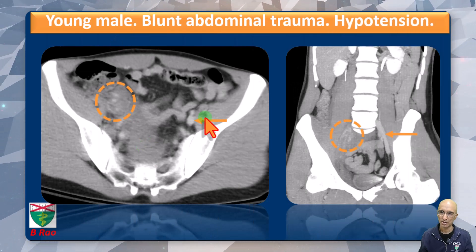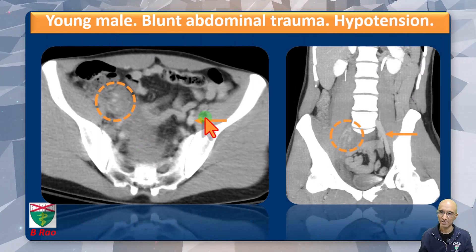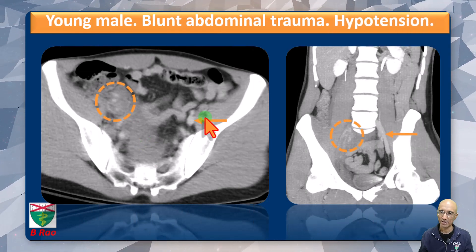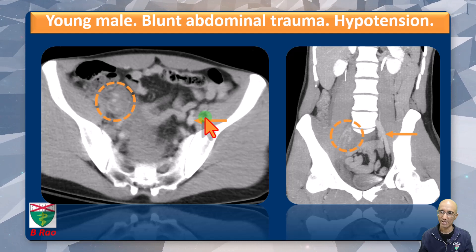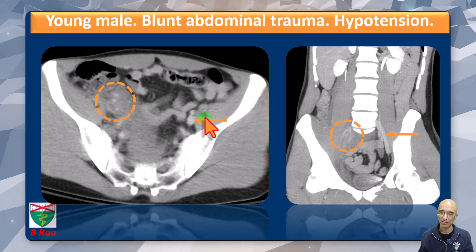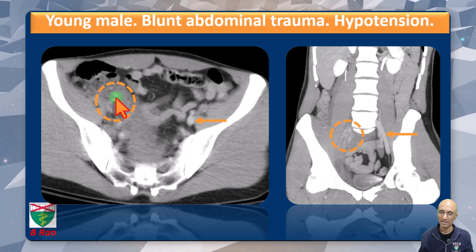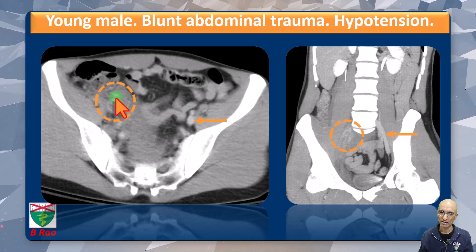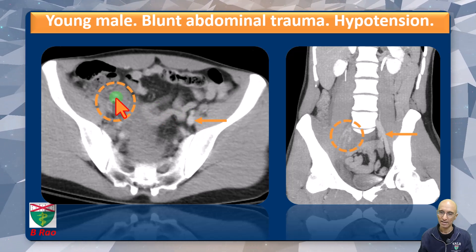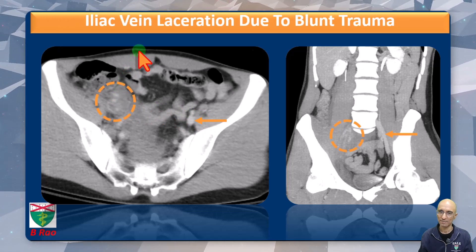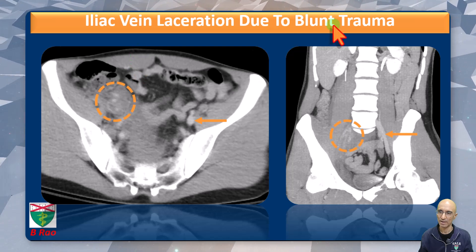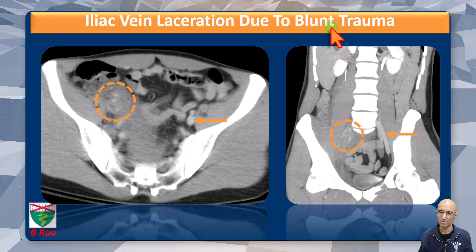On these snapshot images we can see the contralateral normal appearing common iliac vein and normal left common iliac vein, but on the right side there is active contrast extravasation from the iliac vein. Appearances are consistent with iliac vein laceration due to blunt abdominal trauma.